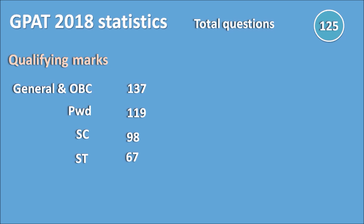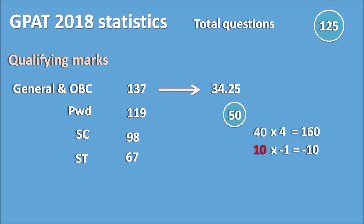If you get marks above 137, you are qualified in GPAT 2018. 137 marks divided by 4 gives 34.25, meaning you need to attempt at least above 34.25 questions correctly. For example, if you attempt 50 questions with 40 right and 10 wrong: 40 × 4 = 160 marks, minus 10 × 1 = 10, giving a total of 150 marks — you are qualified.